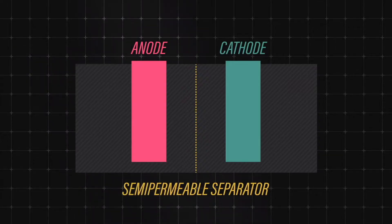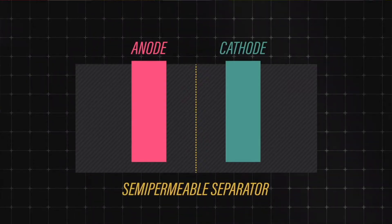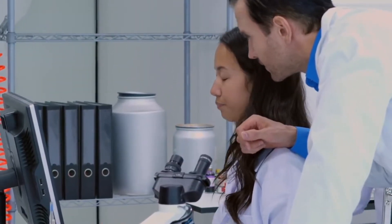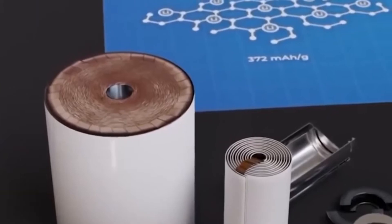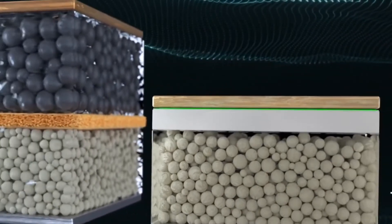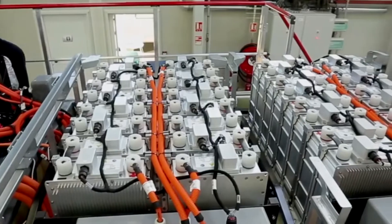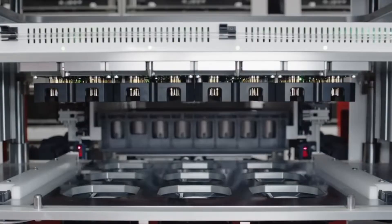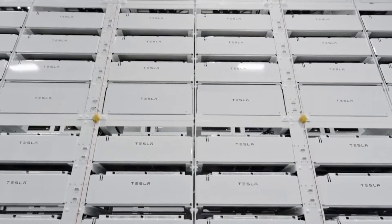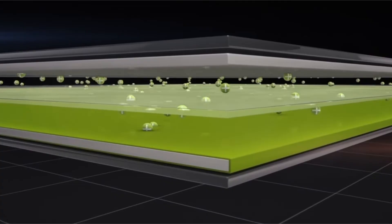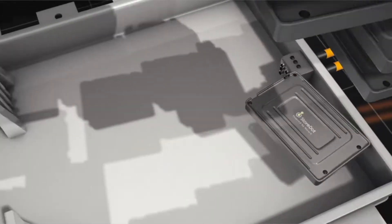Tesla appears to have enough 4680 cells on hand to start and maintain production. However, given the high demand of its vehicles and plans to eventually bring the Cybertruck to market, it will require a massive influx of these cells in the near future. It's no surprise that Tesla is relying on Panasonic, its primary battery supplier. Panasonic has also stated that it is developing 4680 cells. Furthermore, the battery manufacturer has already stated that it will begin supplying Tesla with cells next year.